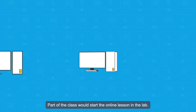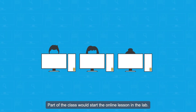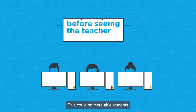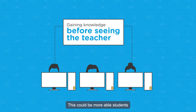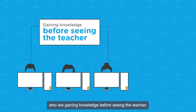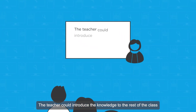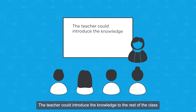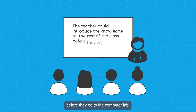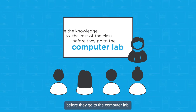Part of the class would start the online lesson in the lab — this could be more able students who are gaining knowledge before seeing the teacher. The teacher could then introduce the knowledge to the rest of the class before they go to the computer lab.